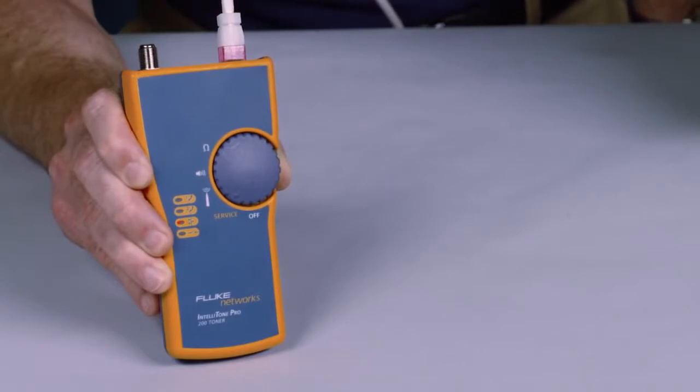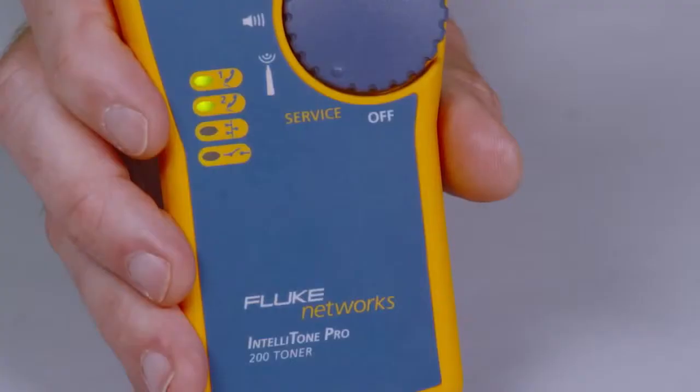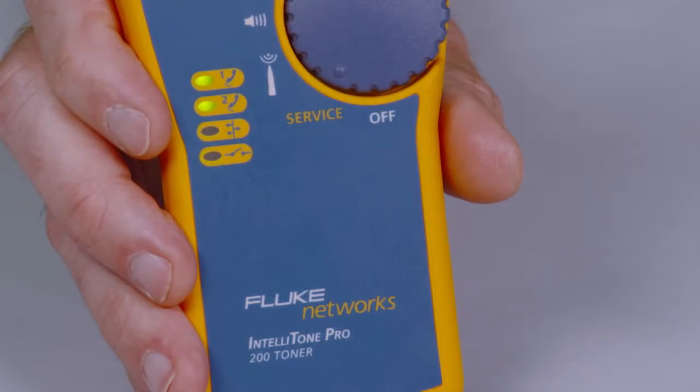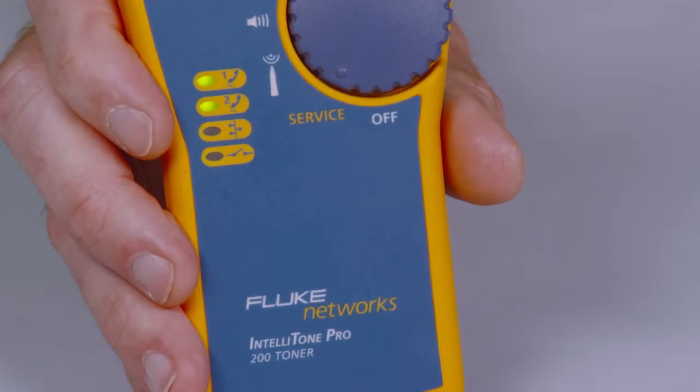Use the 100 to detect line 1 voltage polarity and ring. The IntelliTone Pro 200 adds line 2 troubleshooting. Confirm telecom circuits with the built-in talk battery capability and validate telephone service and polarity.